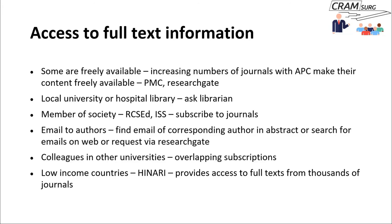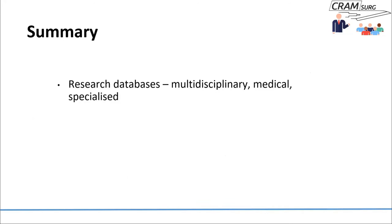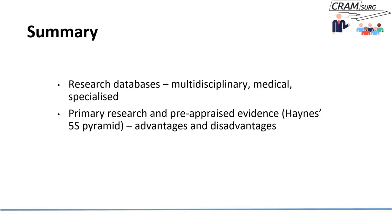You've probably heard of HINARI — a system set up by the World Health Organization providing access to full text from thousands of journals to people in medium and low-income countries. To summarise: we covered research databases, primary research versus pre-appraised evidence and their advantages and disadvantages, the Haynes 5S pyramid, and how to access full text. This concludes our discussion on the second step of EBM — acquiring the evidence. For future talks, we can move on to the third and more meaty step: appraising the evidence.